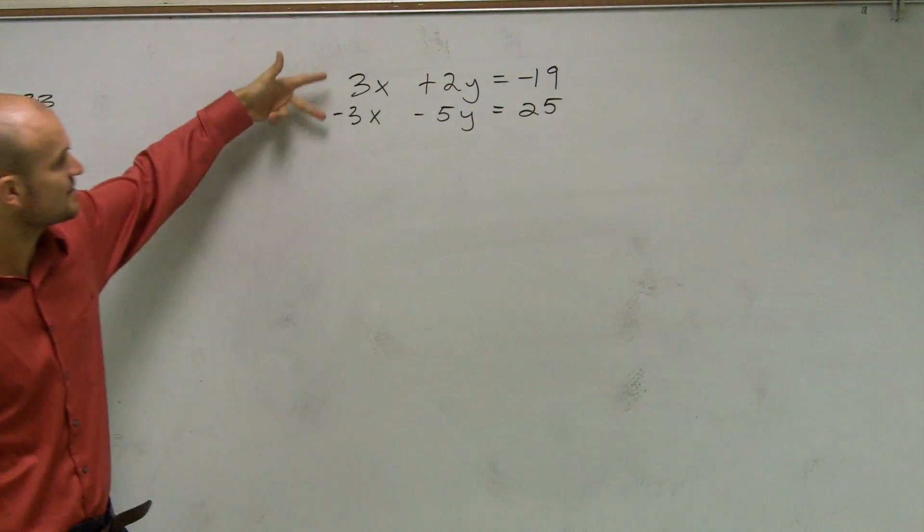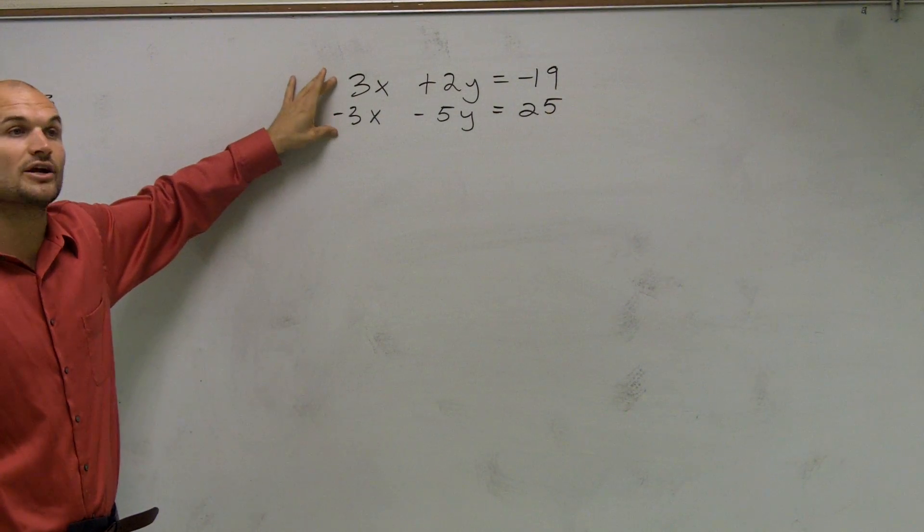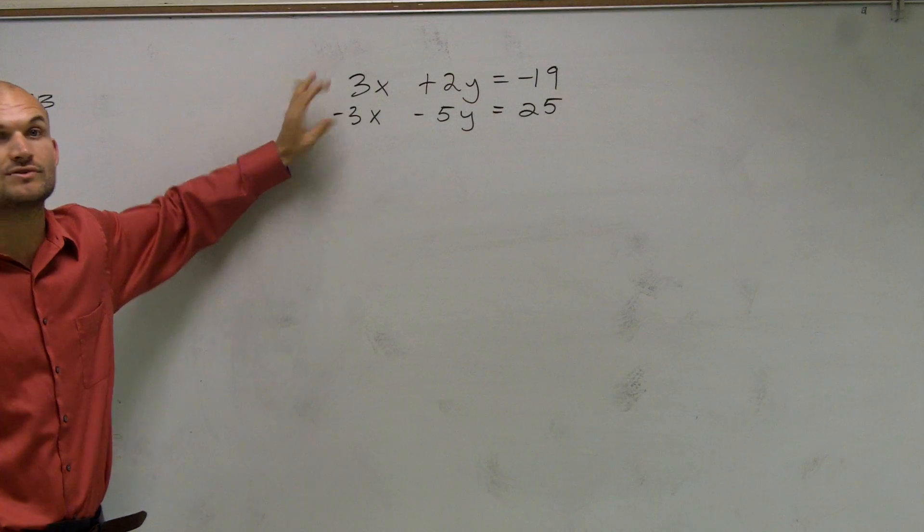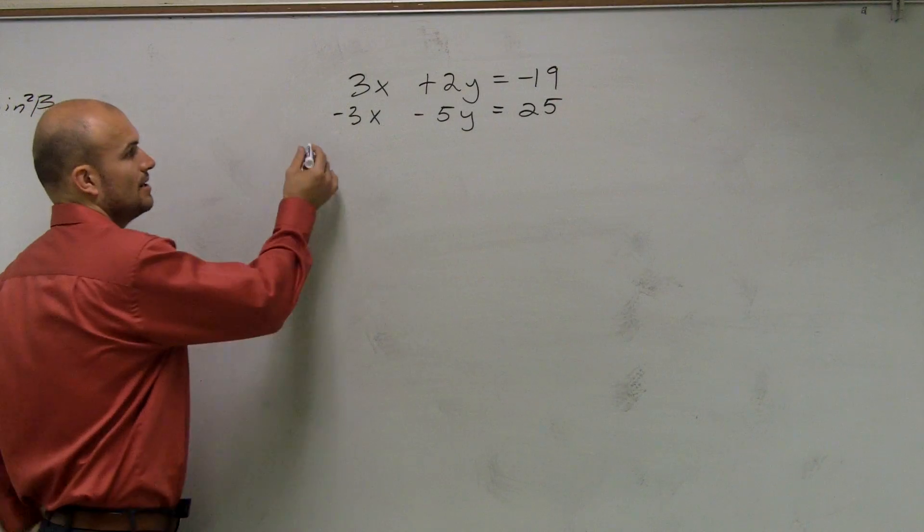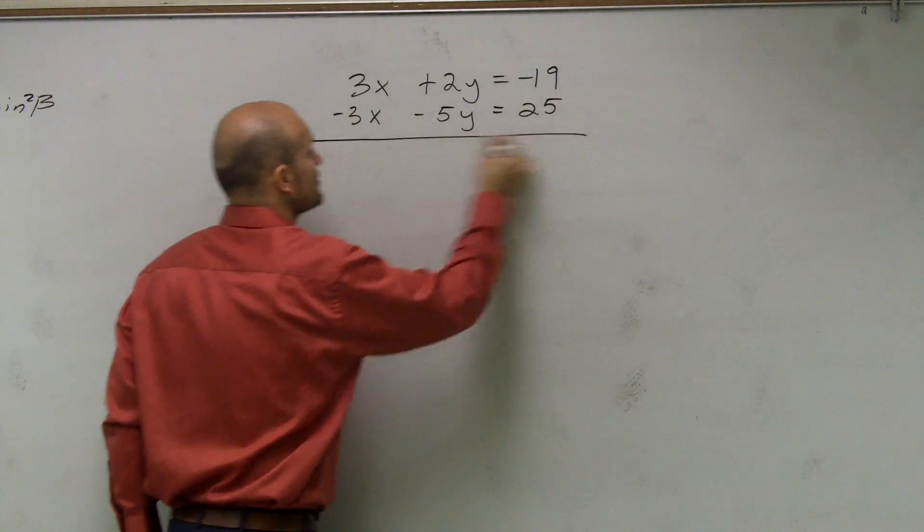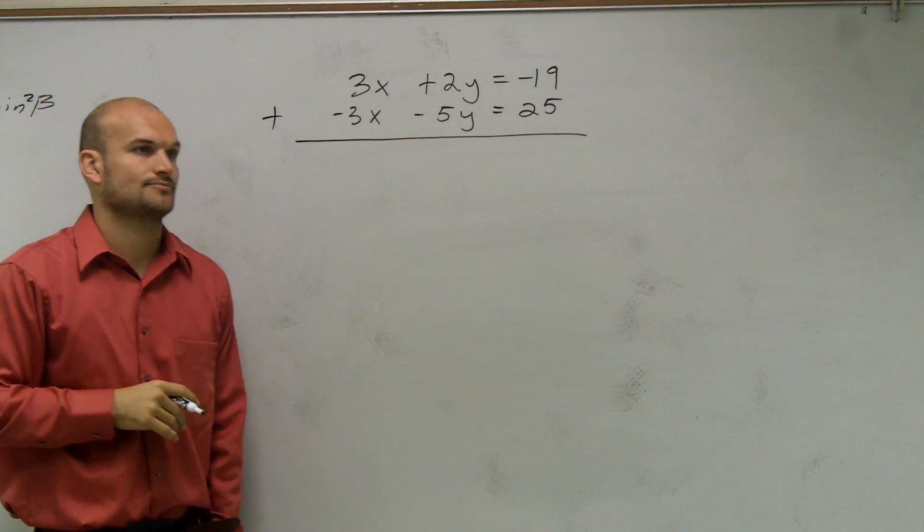So if you look at this, I have a positive 3 and a negative 3. So therefore, they're opposite signs. So what I'm going to do is I'm going to eliminate these equations by adding. So what you're simply going to do is add the two equations.